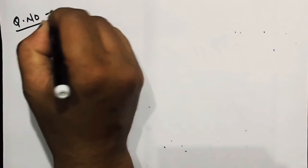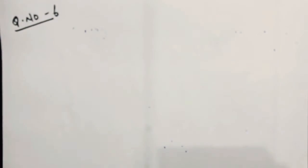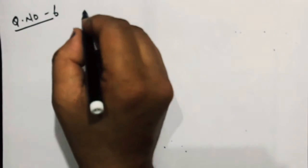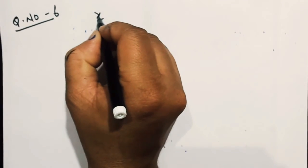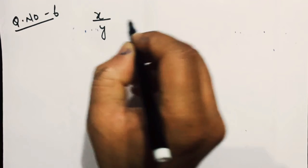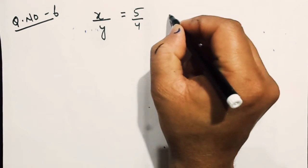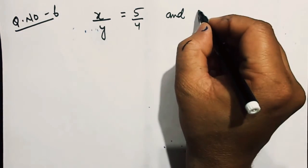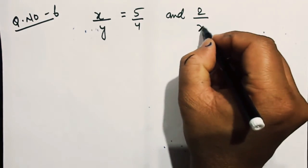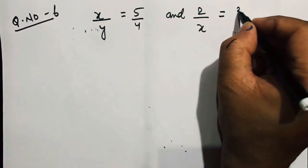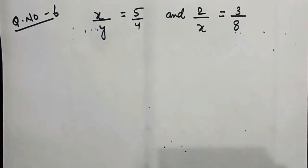Now let's come to question number 6. The video is going to be very short, therefore I think you people will not get bored. In question number 6, they say that the value of x by y is given as 5 by 4, and the value of 2 by x is given as 3 by 8.